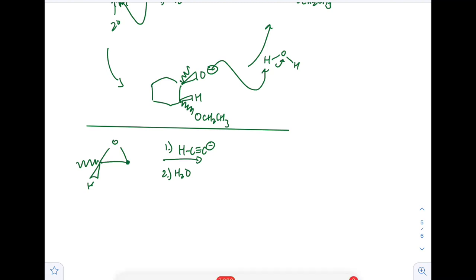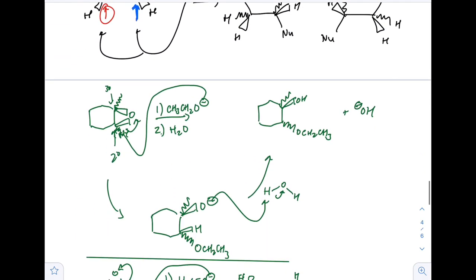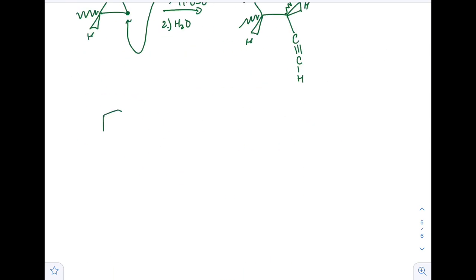Here we have an acetylide ion as the nucleophile, with water in the second step to protonate. The least substituted carbon is attacked. After protonation of that alkoxide, we get the alcohol, with the acetylide added to the carbon on the right. Strong nucleophile via SN2 attacks at the primary/less substituted carbon — that's more reactive for SN2 — rather than the tertiary.